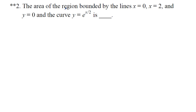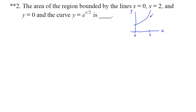Next, problem 2: find the area of the region bounded by the lines x equals 0, x equals 2, y equals 0, and the curve y equals e to the x over 2. We go ahead and draw our x-y coordinate plane. We're going between x equals 0 and x equals 2. We have e to the x over 2 as our f of x, because that's our upper function. And y equals 0 is our g of x, so g of x equals 0 and f of x equals e to the x over 2.